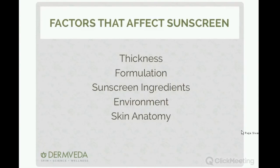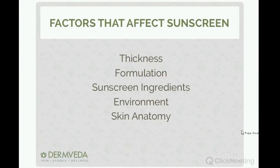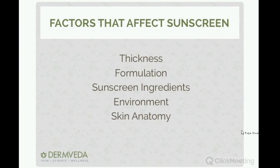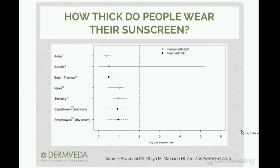There are five main factors that affect sunscreen performance: thickness of application, formulation type, ingredients, environment, and skin anatomy. The FDA mandates that sunscreens are tested at 2 milligrams per square centimeter. However, independent studies of how thick people actually apply sunscreen in the real world — including studies of dermatologists and people with sun-sensitive conditions — show that no one is applying sunscreen at that 2 mg/cm² level. Everyone is applying around 0.5 to 1 mg/cm².